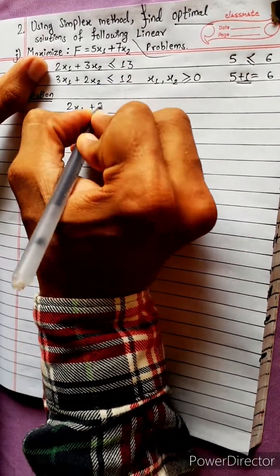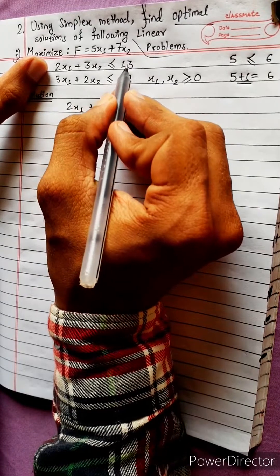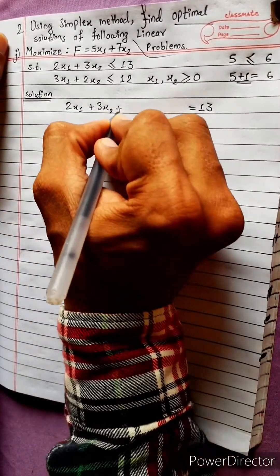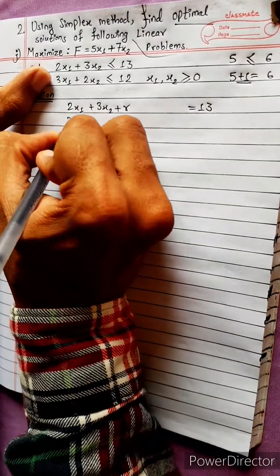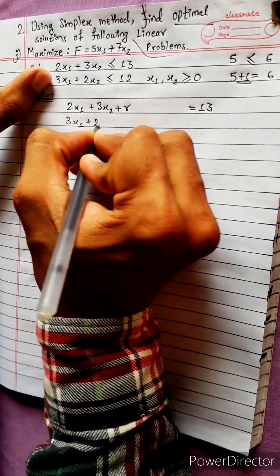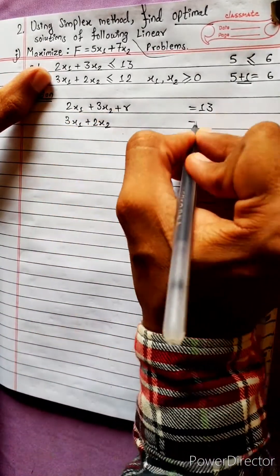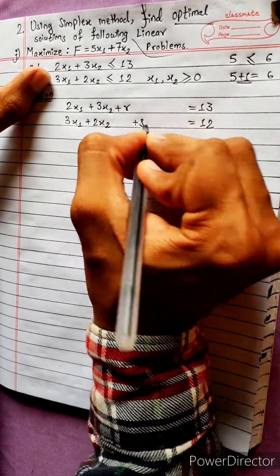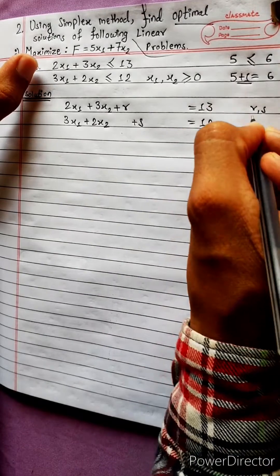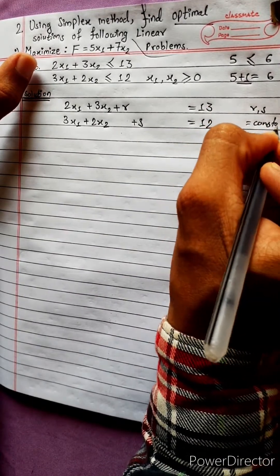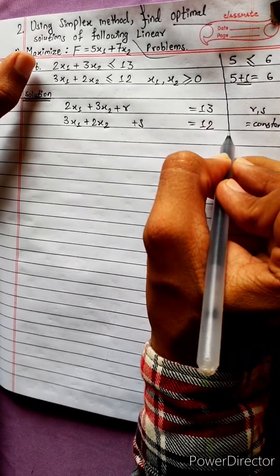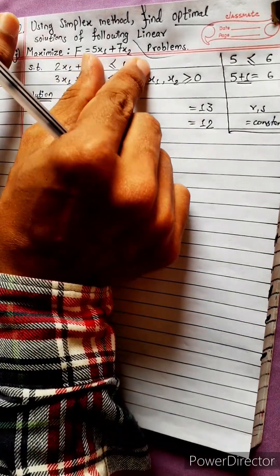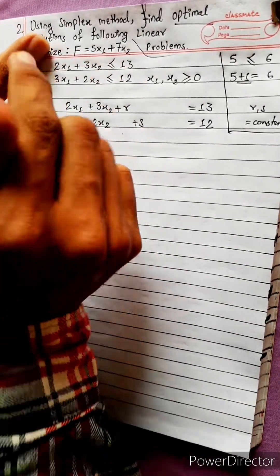The constraint is 2x1 plus 3x2 equals 13, and 3x1 plus 2x2 equals 12, where the right-hand side values are constants. This is the main equation and the variables are positive.